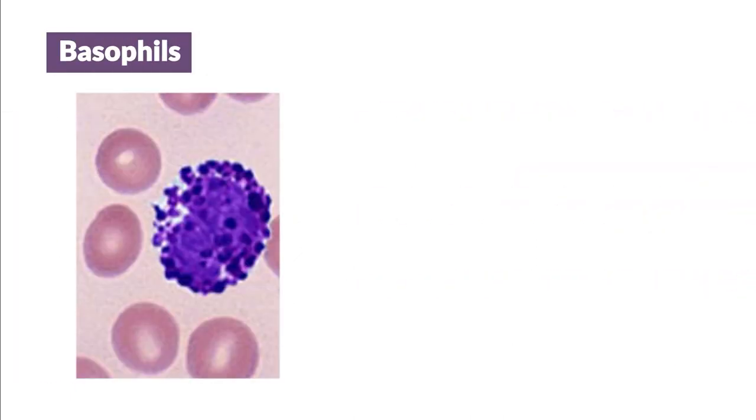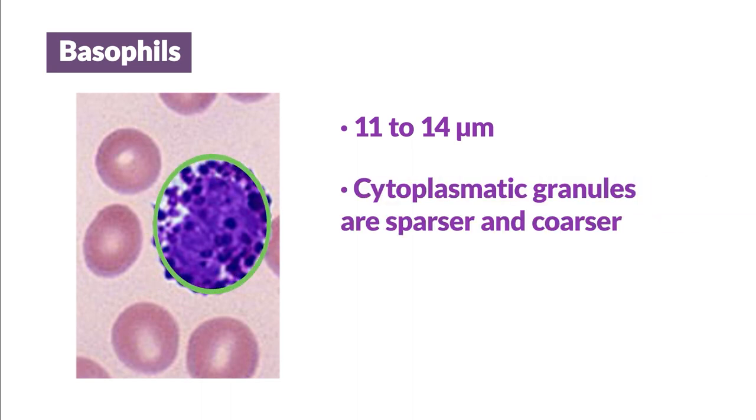Basophils. Basophils are also similar in size to the other granulocytes. Their diameter ranges between 11 and 14 micrometers. In this case, the cytoplasmic granulations are sparser but coarser. As the name suggests, they are stained with basic dyes and have a dark blue or black coloration.